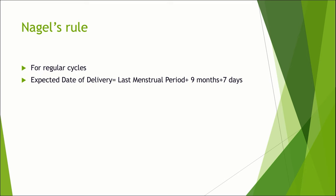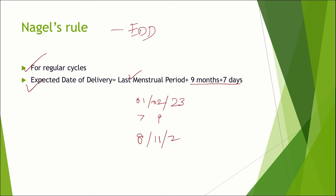Next is Naegele's rule, which is used to find out the estimated date of delivery. We calculate the estimated date of delivery from the last menstrual period, that is the first day of the last menstrual period. From that, we add 9 months and 7 days to calculate the estimated date of delivery. For example, if the first day of the last menstrual period is February 1, 2023, you add 9 months and 7 days, so the estimated date of delivery will be November 8, 2023. If you are crossing into the next year, you can subtract 3 months and add 7 days to obtain the estimated date of delivery.